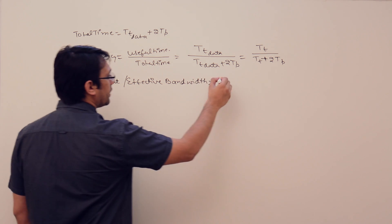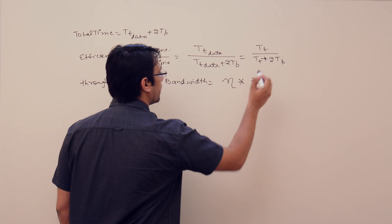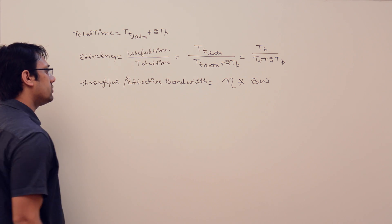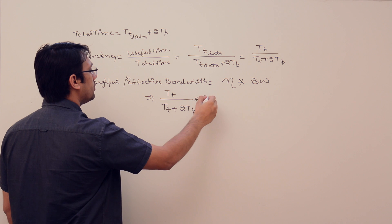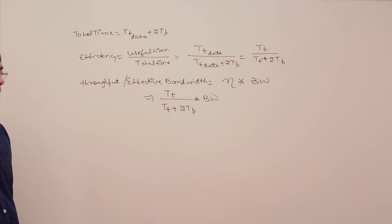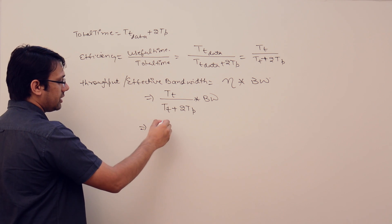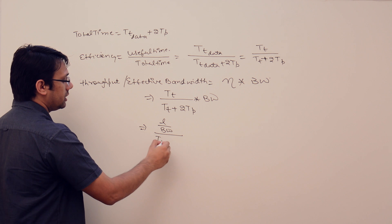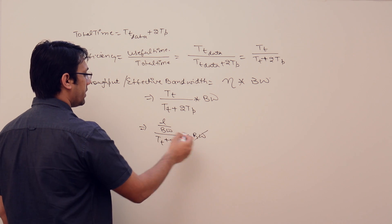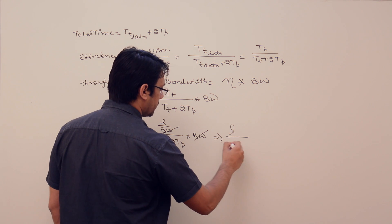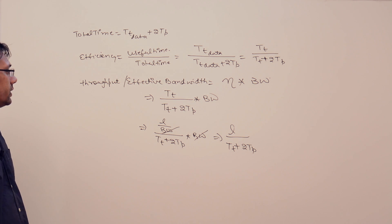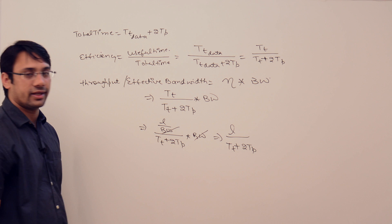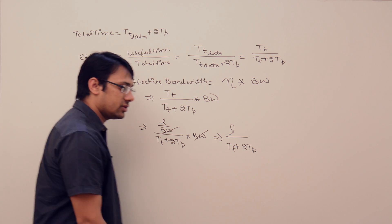Effective bandwidth is efficiency multiplied by bandwidth. Substituting efficiency as Tt upon (Tt plus 2·Tp), and transmission time as length upon bandwidth, the bandwidth terms cancel, giving throughput equals length of the data packet upon (Tt plus 2·Tp). You can use these values to generate further relations. This is called effective bandwidth or throughput.